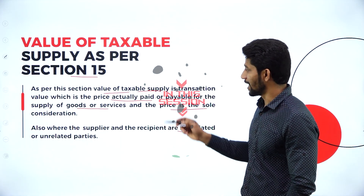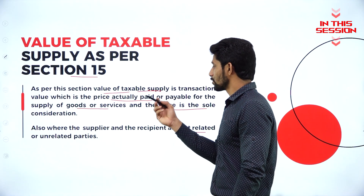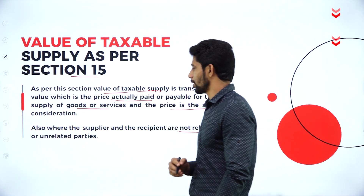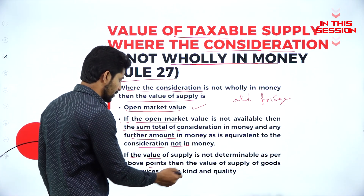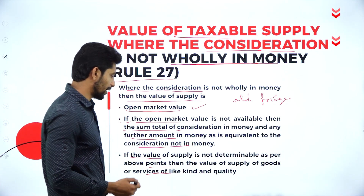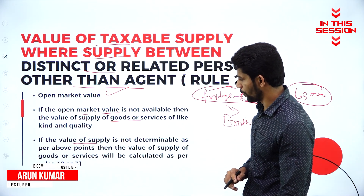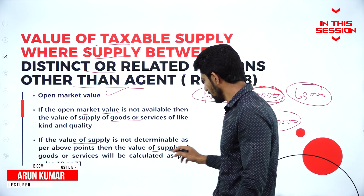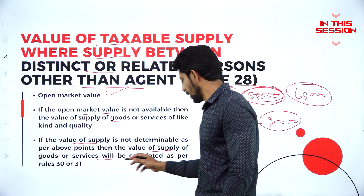Taxable supply is transaction value, which is the price actually paid or payable for the supply of goods or services. If the value of supply is not determined as per the above points, then the value of supply of goods or services of like kind and quality is used. If still not determinable, the value will be calculated as per rule 30 and 31.